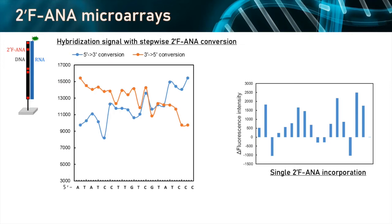In both cases — whether we introduce FANA stepwise from the 5' end or from the 3' end — once we reach position C16, the introduction of FANA at that position always produces a big increase in fluorescence intensity. That correlates very well with our feature selection. Looking at single FANA incorporation at each of the 18 positions, we again see a big increase at C16 position, while T15 — immediately 5' to it — actually decreases fluorescence intensity.